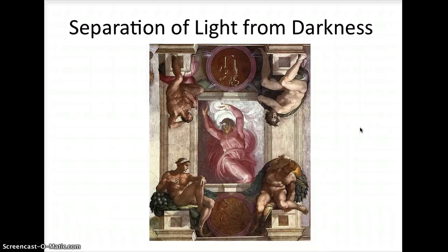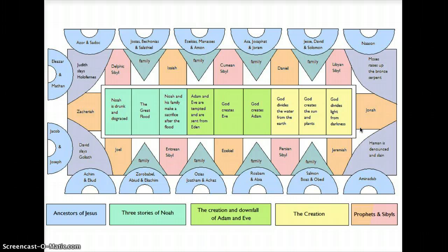The Sistine Chapel fresco I have chosen to research is called The Separation of Light from Darkness. It was completed by Michelangelo most likely during the summer of 1512, which is the last year that the Sistine Chapel ceiling was being painted. It is from the Genesis chronology and is the first of the nine central panels that run along the middle of the ceiling.